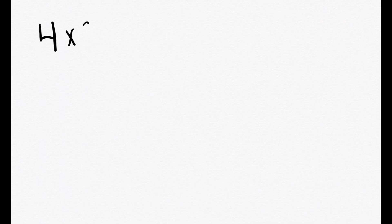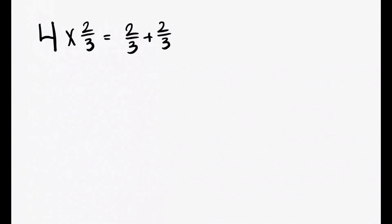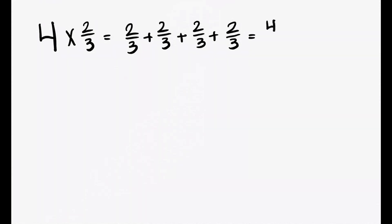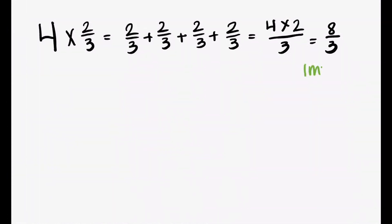So let's go ahead and try 4 times 2 thirds. That simply means 2 thirds 4 times. So now that we have it 4 times, we can add or do 4 times 2, because we have 4 twos over 3. 4 times 2 is 8, over 3. 8 thirds is an improper fraction.